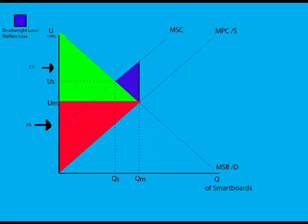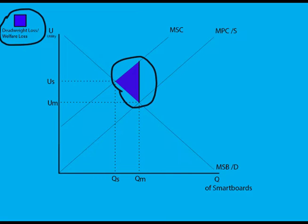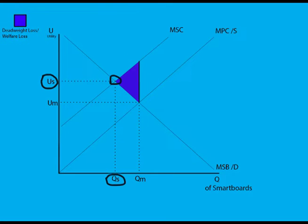The marginal social cost line represents the social cost incurred by the students and teachers from the use of smart boards in their classrooms, and in this case, is higher than the marginal private cost line. This creates a deadweight welfare loss pointing towards the socially optimal level represented by US and QS, creating a negative externality.